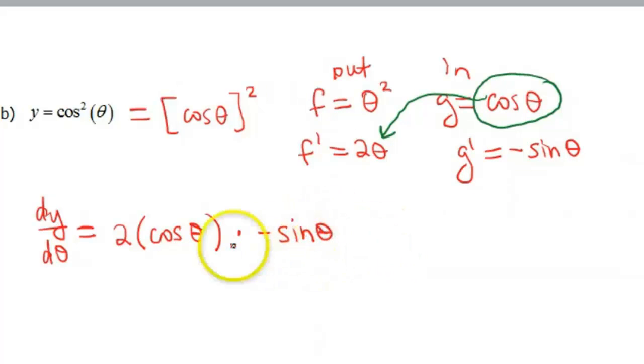Now I will do a little bit of rewriting here, only because I don't like that negative floating in the middle. So I'm going to call this -2cos(θ)sin(θ). Keep practicing. Thank you for watching.